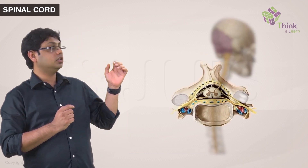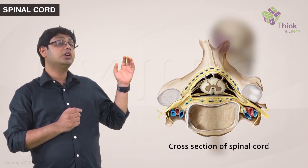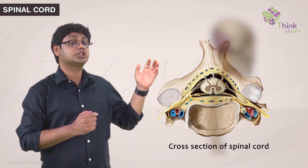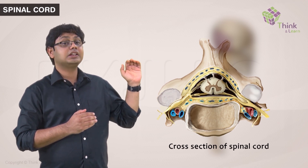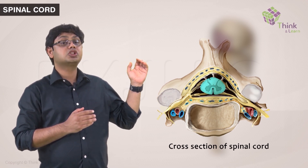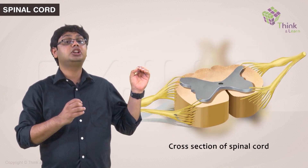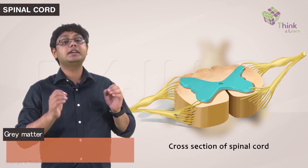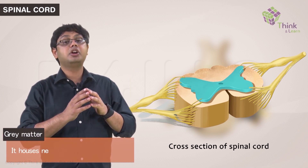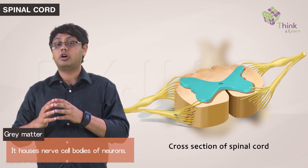Let's cut the spinal cord and take a look at its cross section. You will see that it is an oval structure with a butterfly-like shape. This butterfly is grey because it houses all the nerve cell bodies.